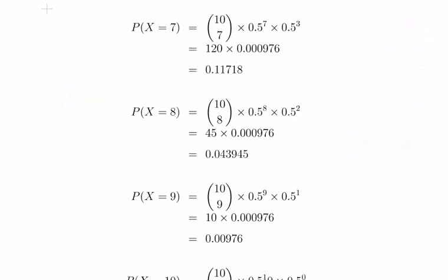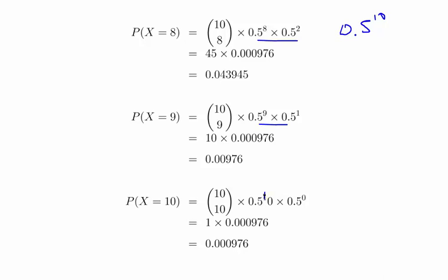Now luckily, just to start off with, 10 choose 7 times 0.5 to the power of 7 times 0.5 to the power of 3. That would work out to be 0.5 to the power of 10, which is what we get here, and what we get here and what we get down below. So there should be a 0 there, 1, 0. Disregard that.